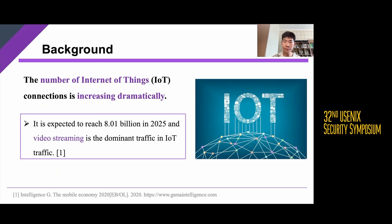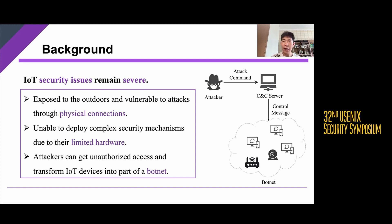Let's begin with the background. In recent years, we have witnessed a dramatic increase in the number of IoT connections, which already accounts for a high percentage of network traffic and will keep growing. It is expected to reach 8.01 billion in 2025, and video streaming is the dominant traffic type. However, IoT security issues remain severe, such as a lack of timely firmware updates, misconfigurations by consumers, and exposure to the outdoors, which can highly increase the risk of attacks on IoT devices.